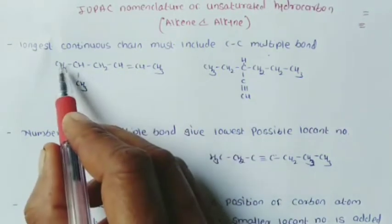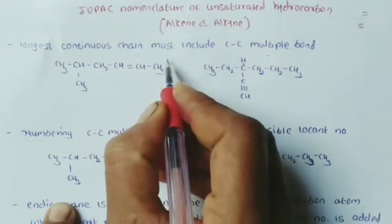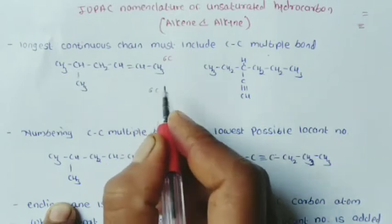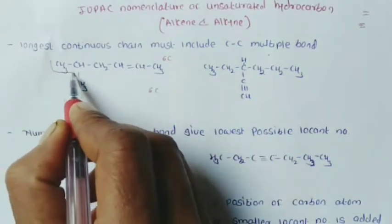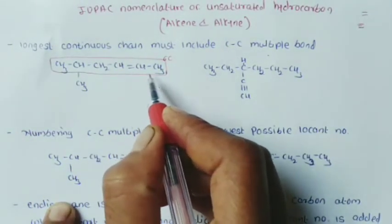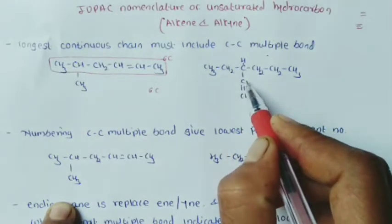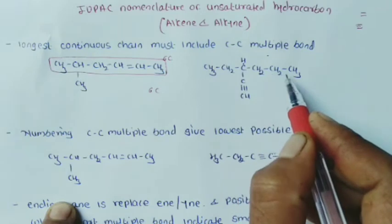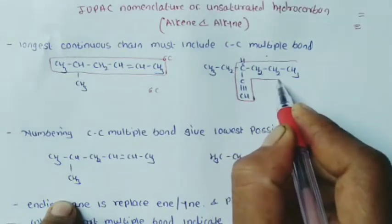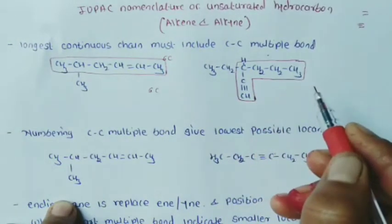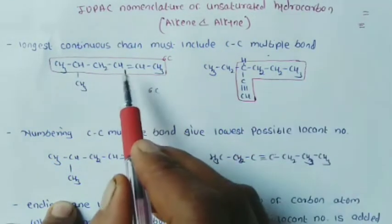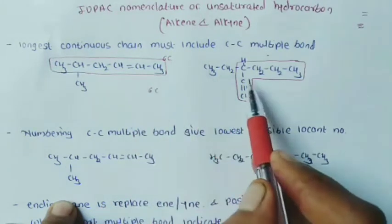Counting the chain: this is 1, 2, 3, 4, 5, 6 — a 6-carbon chain. The other possibility is also 6 carbons. When both options are equal length, we select the chain that includes the carbon-carbon multiple bond. For the alkyne example CH3-CH2-C≡CH-CH2-CH2-CH3, we select the longest chain including the carbon-carbon triple bond. The chain must include either a carbon-carbon double bond or triple bond.